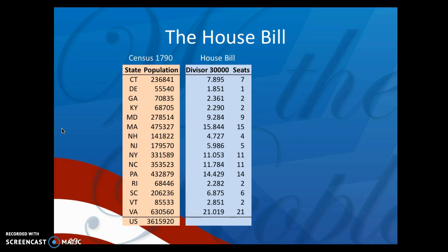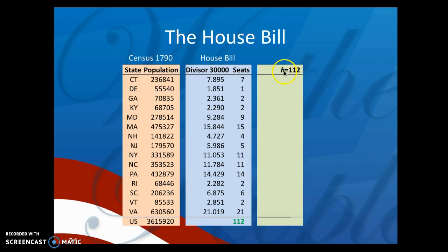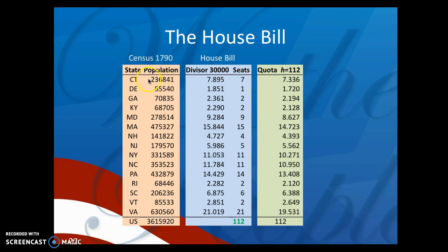Let's see how this worked in the initial House bill. Each state's population was divided by 30,000, then decimals dropped, giving 112. Using the divisor method, we take the total population divided by the house size of 112, which gives about 32,280. We then divide each state's population by that number. So Connecticut's initial quota would be 236,841 divided by the total population divided by 112, giving 7.366.